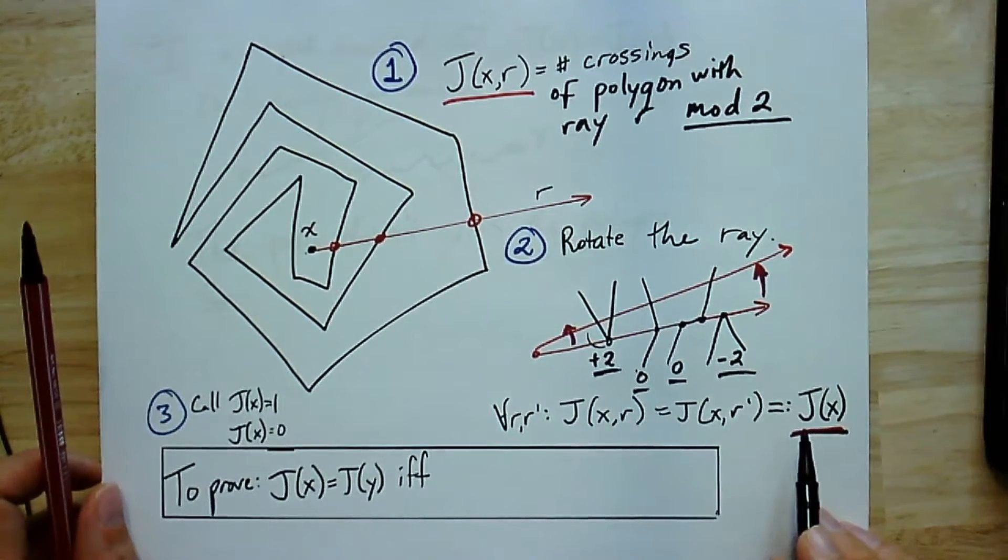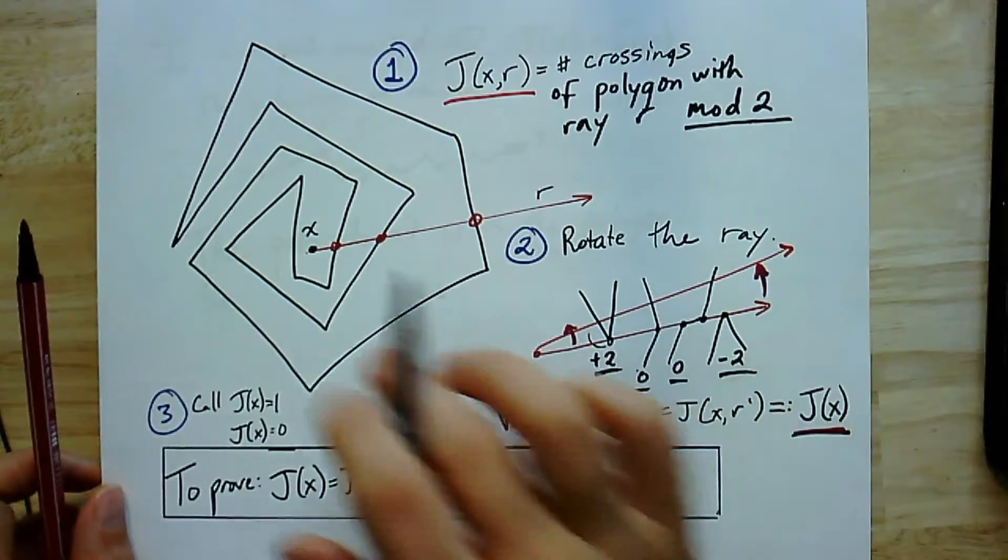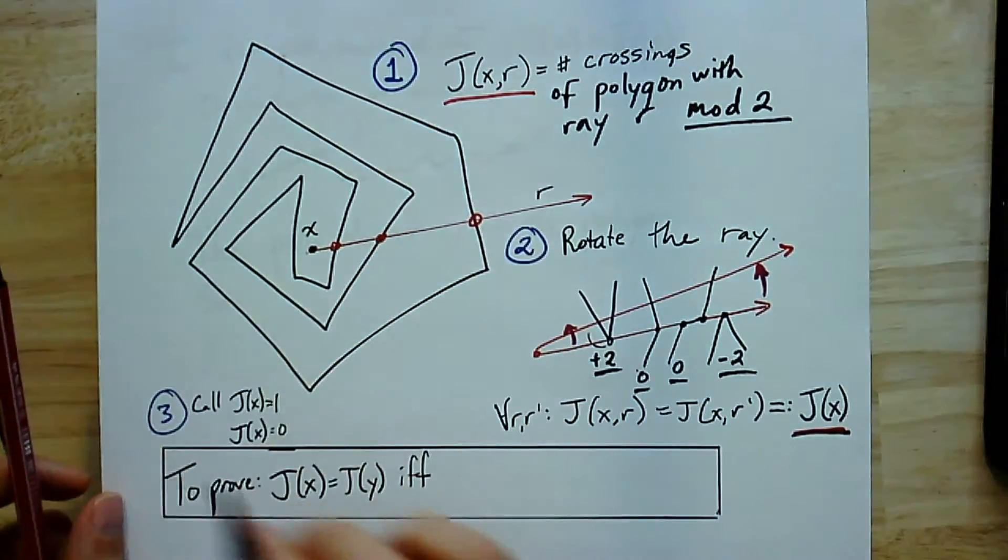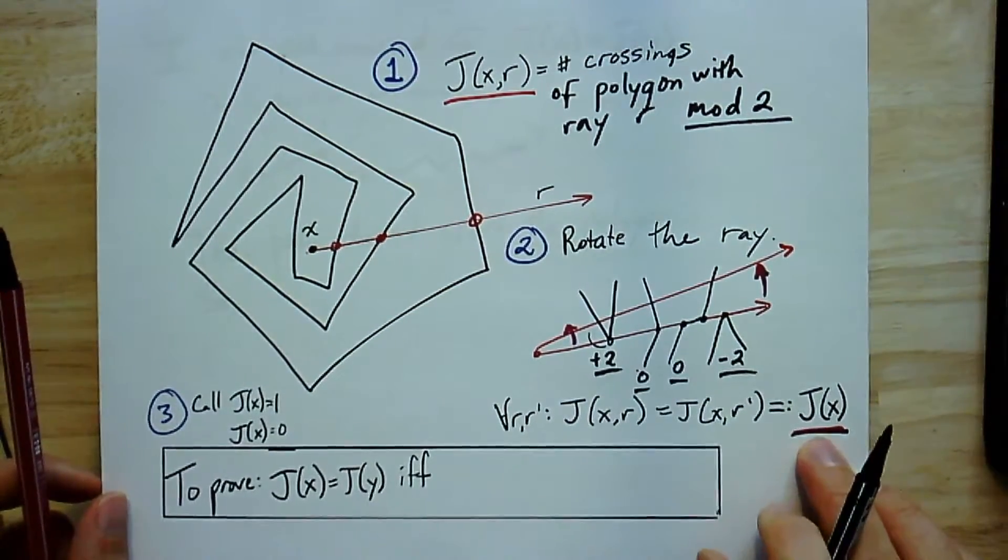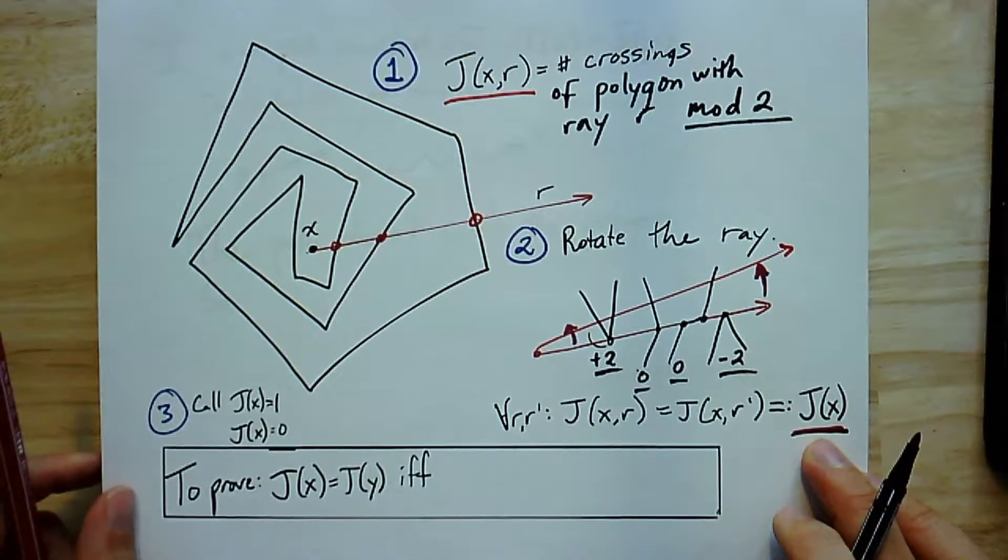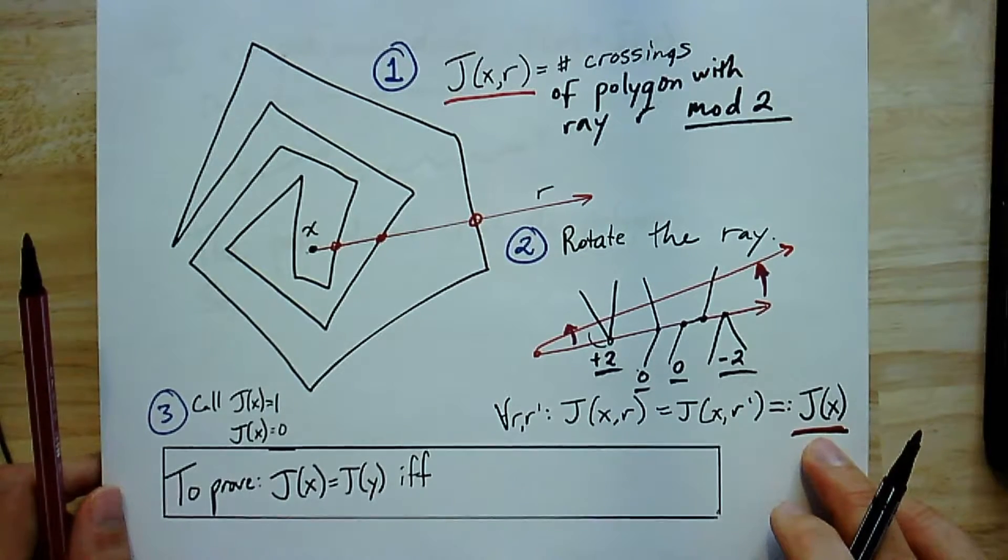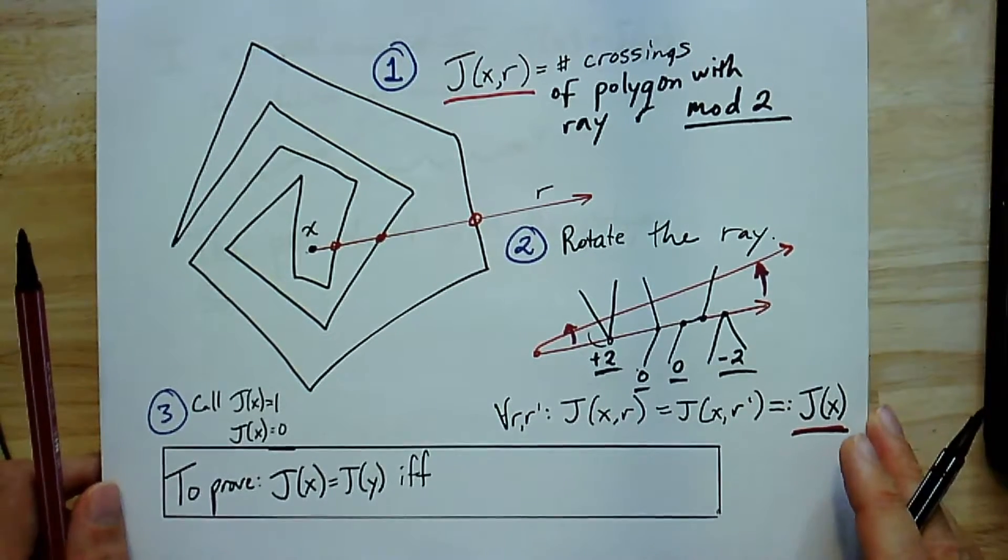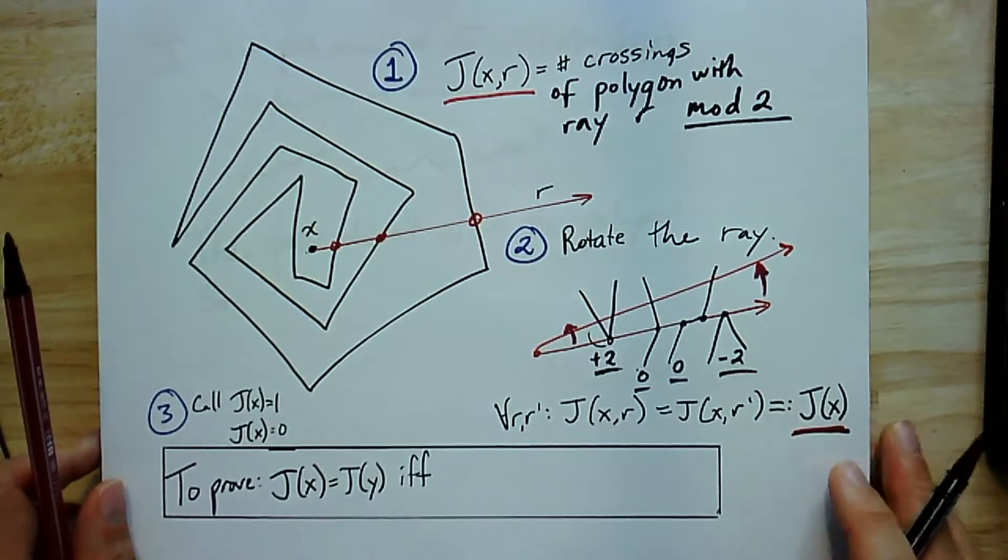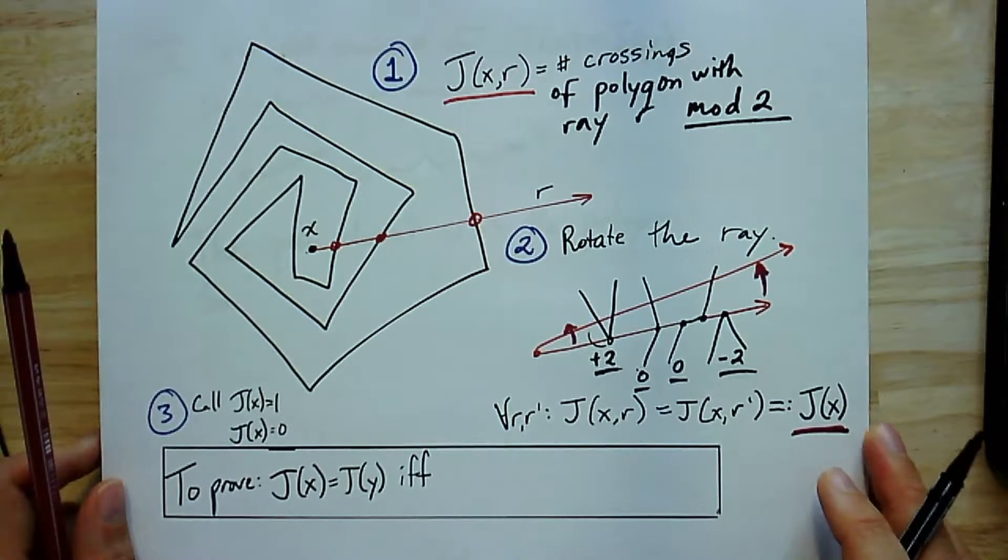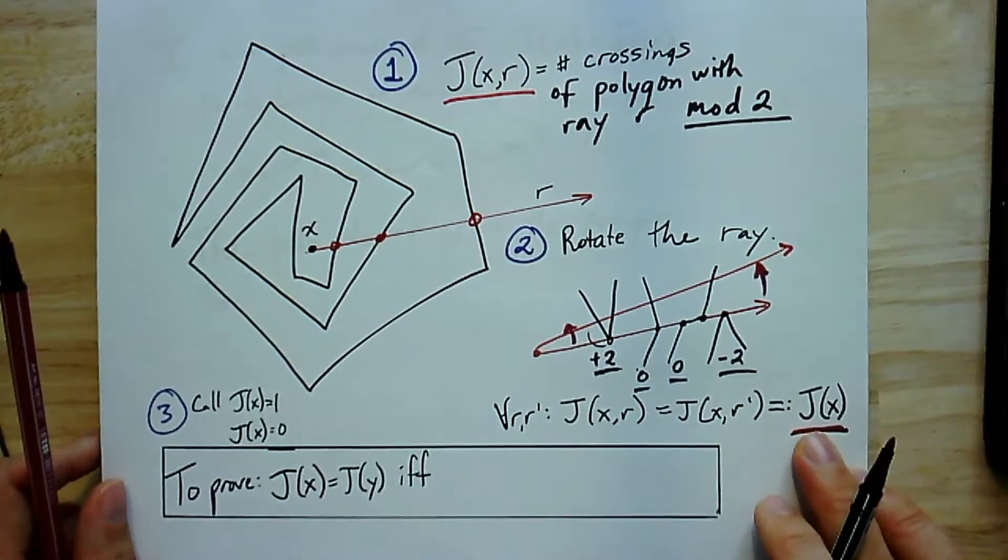Now, something cool happened. We now have a function. For any point in the plane minus the polygon, I take this function, it gives me zero or one. Well, it's going to turn out that if it's zero, that's going to be outside the polygon, and one is going to be inside. So I wanted to claim that there are two components, and now I've actually found them just from this function.